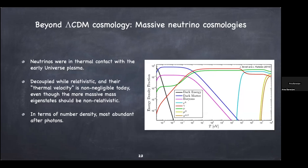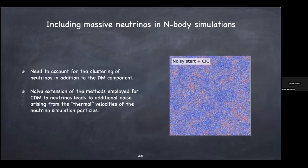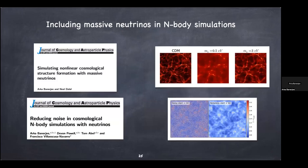One extension is massive neutrino cosmologies. Unlike cold dark matter, neutrinos have thermal velocities — if you naively put them into simulations using existing techniques, they zoom around and create noise. In the last 10 years, many groups including myself have discovered ways to get around this noise from thermal velocities. We are now confident about using massive neutrino cosmologies as an extension to standard Lambda-CDM. With older techniques you'd get a garbage density field; with the new methods, you can see the cosmic web structure appear also in the neutrinos.